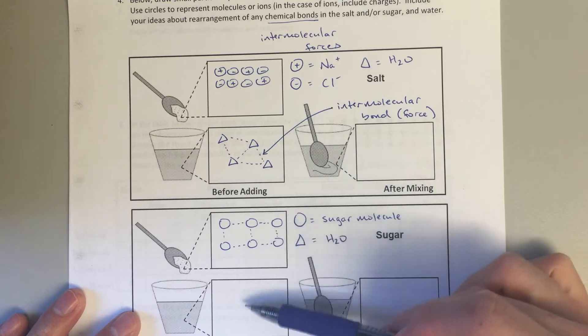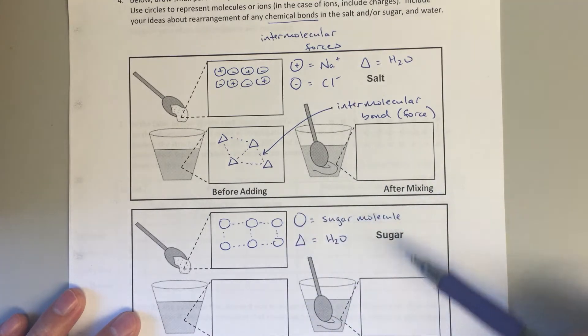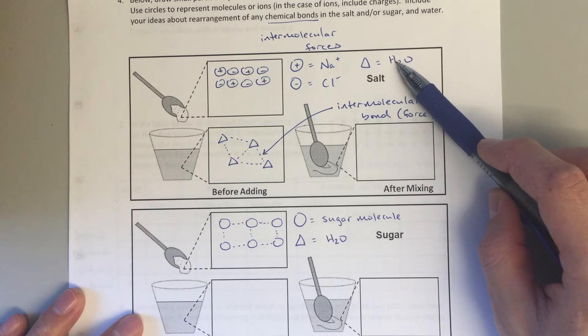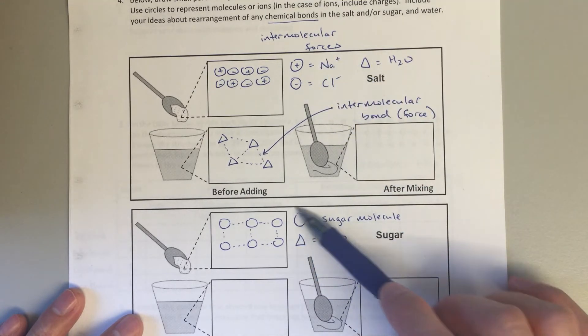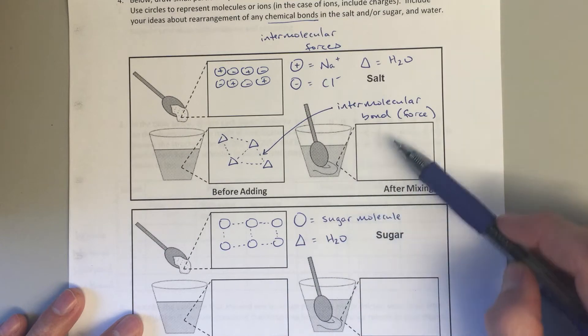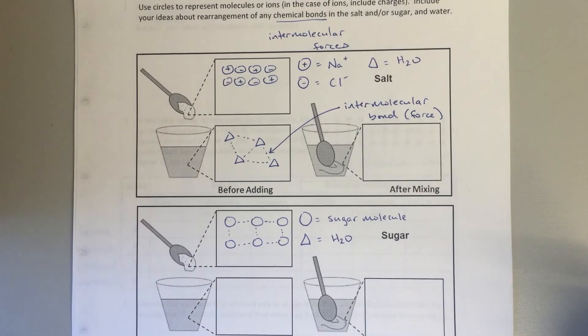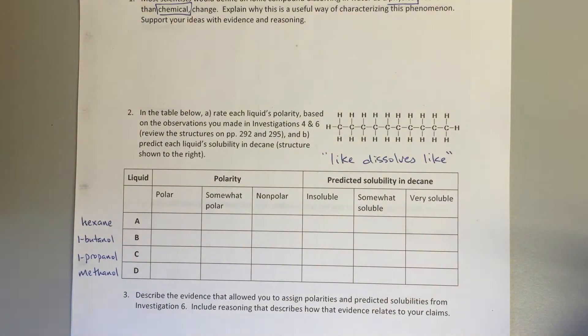So we can show our two pictures and then what happens after they mix—how are these water molecules going to be interacting with these ions, how are these water molecules going to be interacting with this sugar molecule, what is the picture of that look like on a small particle scale?